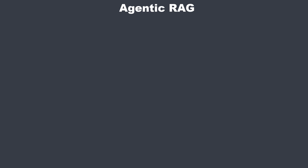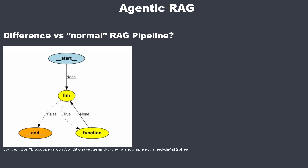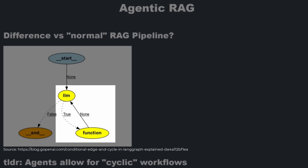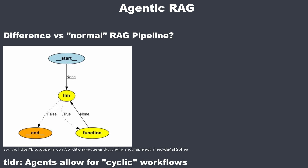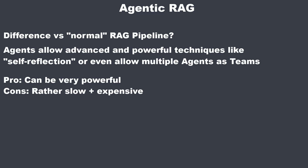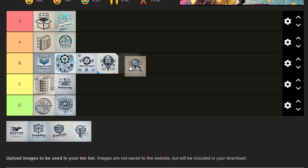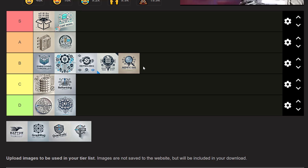The next technique is agentic RAG. The key difference between an agent and a normal RAG pipeline is that an agent is cyclic — it can run in a loop. Agents enable techniques like self-reflection or hierarchical teams. They're great, but can be expensive and slow. I'd put agentic RAG in B tier since I really like agentic approaches.